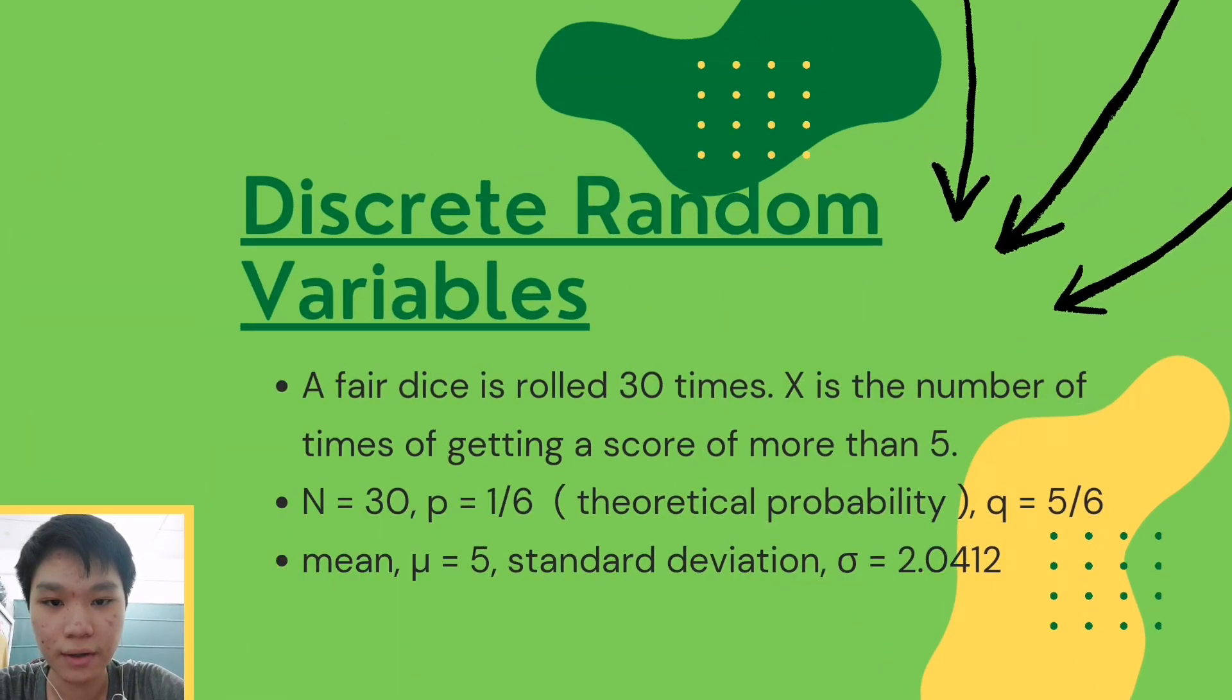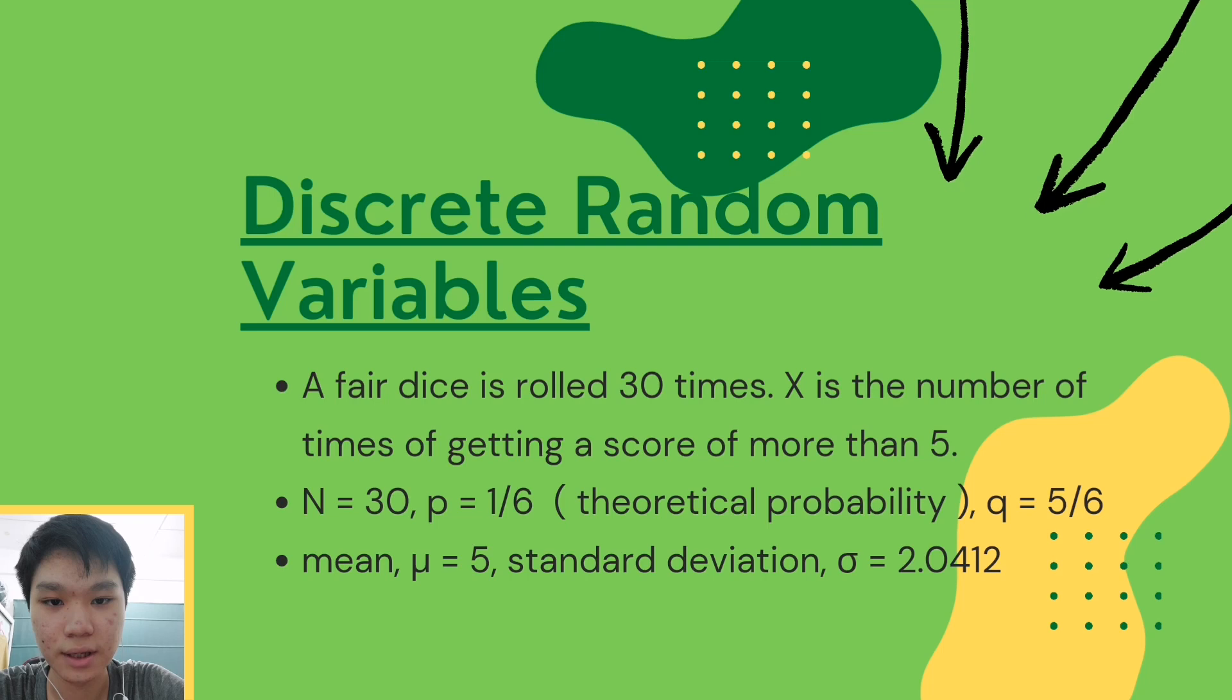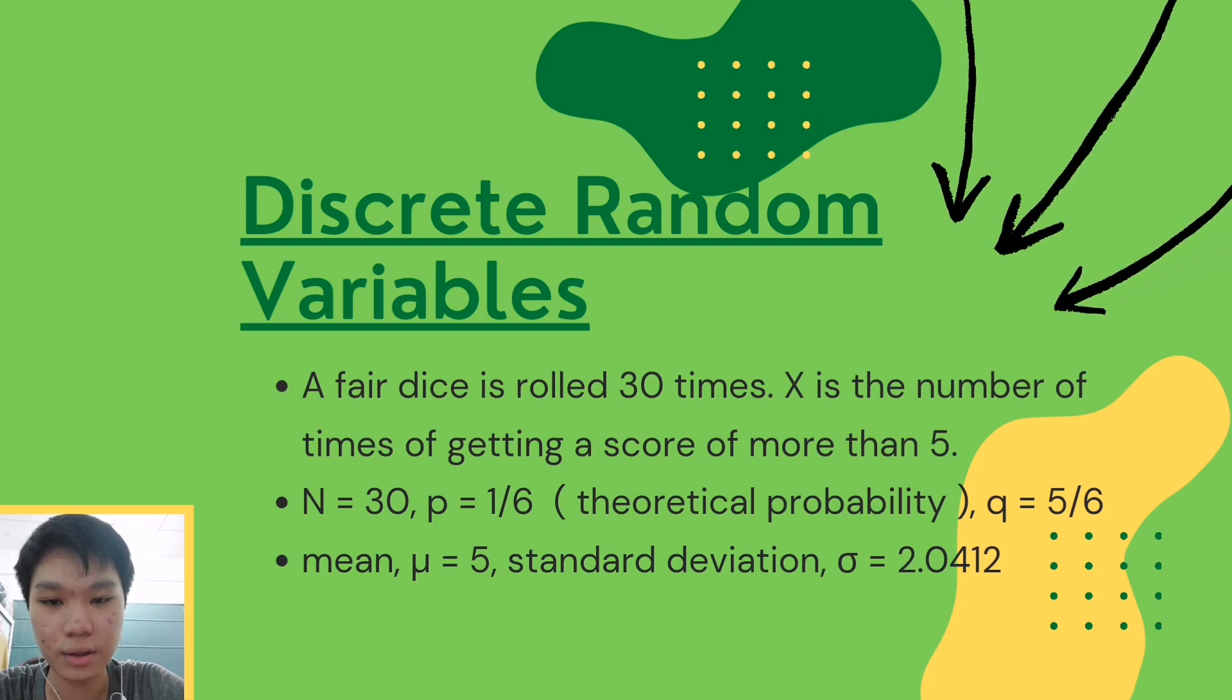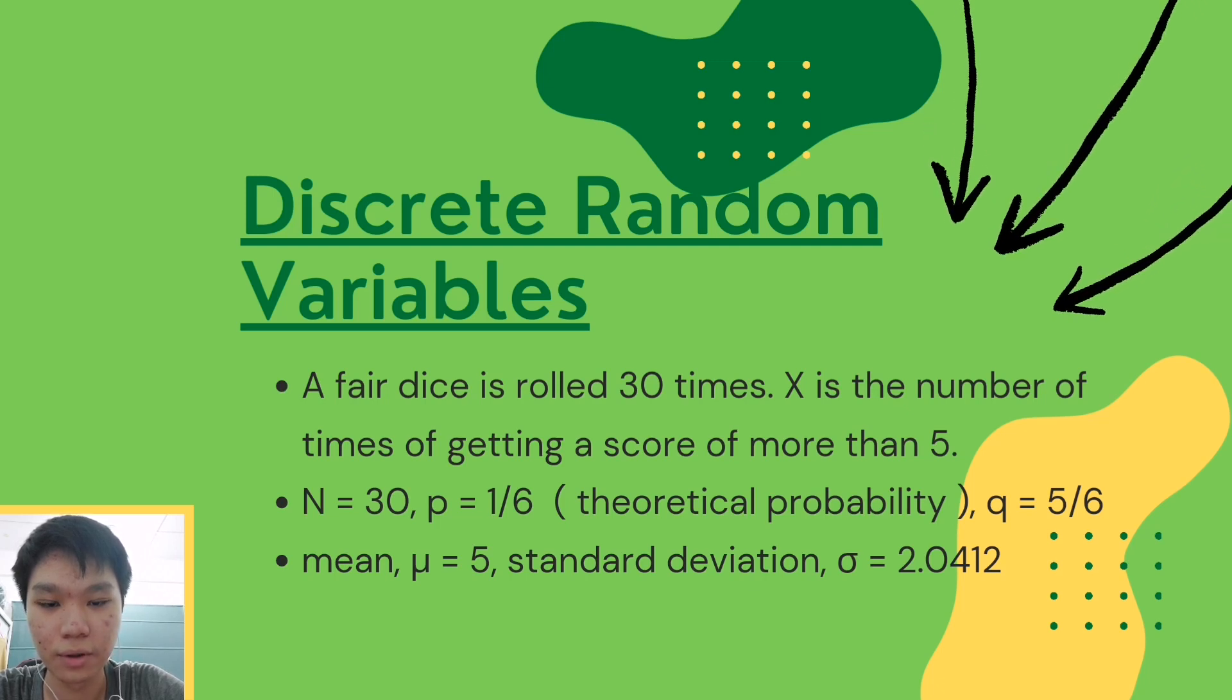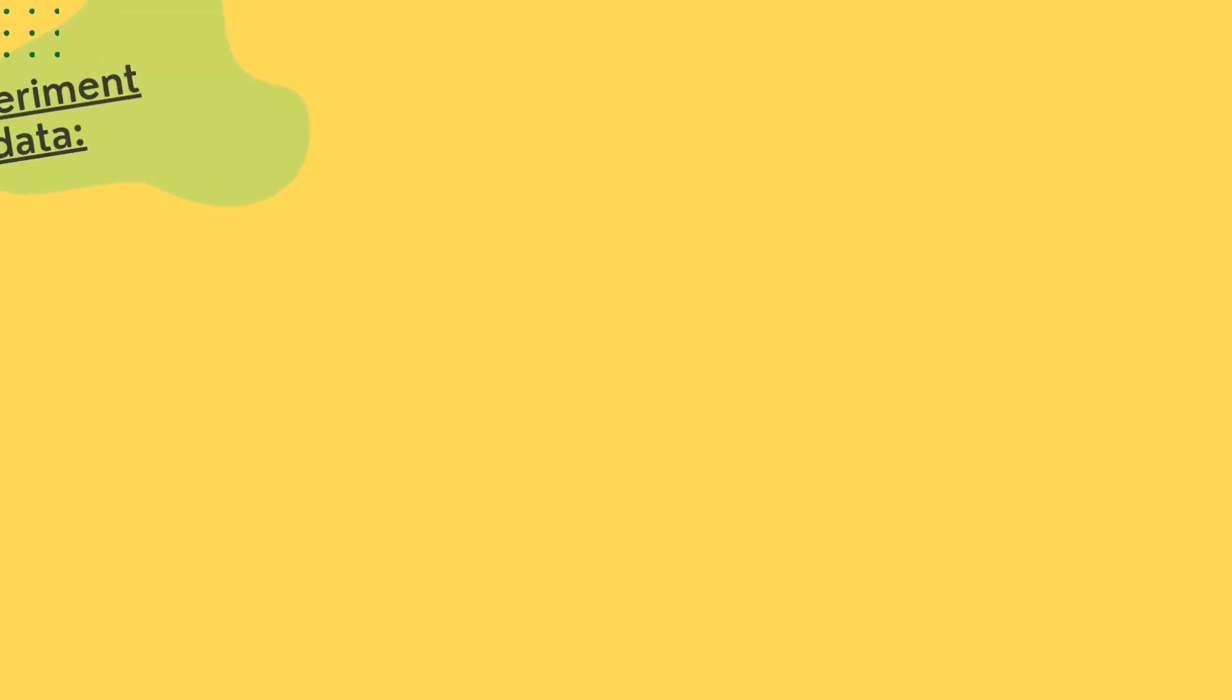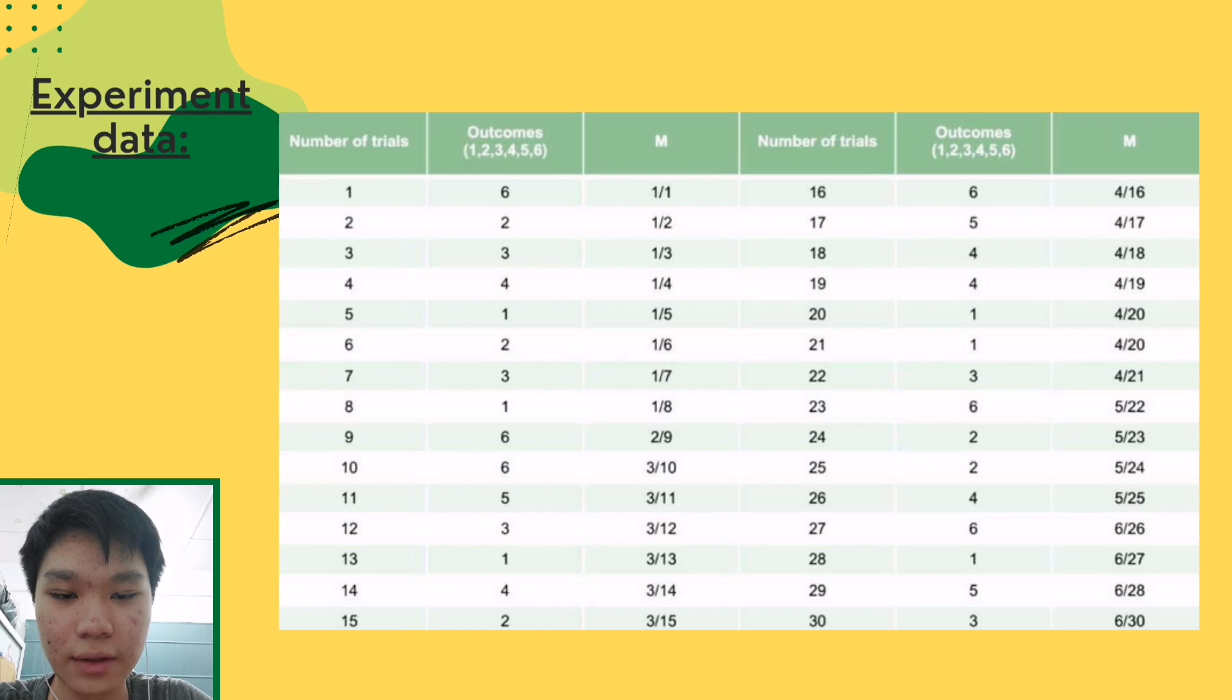For discrete random variables, we use a fair dice rolled 30 times. N represents 30 trials, p represents the probability of getting a number more than 5, which is 1/6, and q represents not getting a number more than 5, which is 5/6. The mean would be 5 using the formula n times p, and the standard deviation would be 2.0412 using the formula square root n times p times q. The final experimental data we got was 6/30, so we selected 1/5 as our experimental probability.